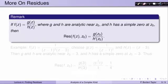To finish, I want to show one other very useful fact. Suppose f = g/h where g and h are both analytic functions and h has a simple zero at c0. Then the residue of f at c0 can simply be found by evaluating the numerator g at c0 and dividing by the derivative h' evaluated at c0.